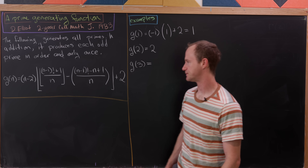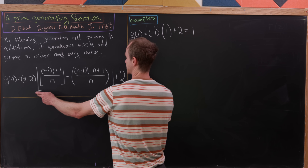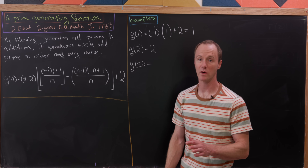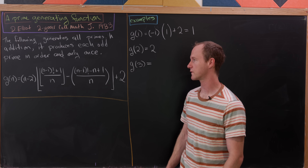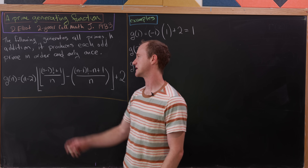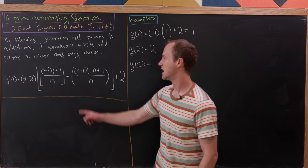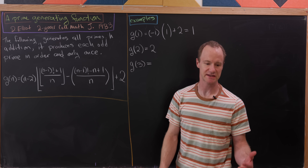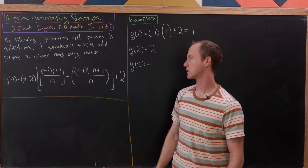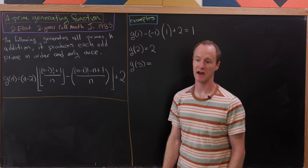Let's look at the function. We have g(n) = (n − 2) times a big object inside a floor function. Inside this outer floor function, we've got another floor function — specifically floor of (n−1)! + 1 over n. From that, we're subtracting (n−1)! − n + 1 over n. And then we're adding 2 to all of that at the end.